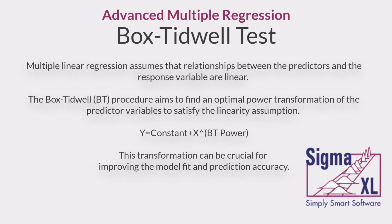Multiple linear regression assumes that relationships between the predictors and the response variable are linear. The Box-Tidwell procedure aims to find an optimal power transformation of the predictor variables to satisfy the linearity assumption. This transformation can be crucial for improving the model fit and prediction accuracy.